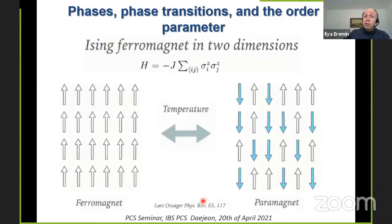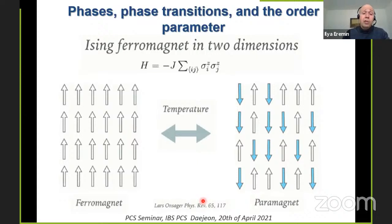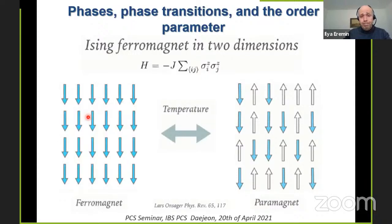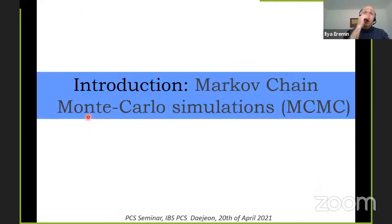This is something you know very well: in one dimension, a simple description has spins pointing up or down. At high temperature, entropy prevents a phase transition — the state is disordered. Once you lower the temperature, the interaction favors, for positive J, alignment of the spins; you have a Z2 symmetry breaking where you have either all spins up or all spins down.